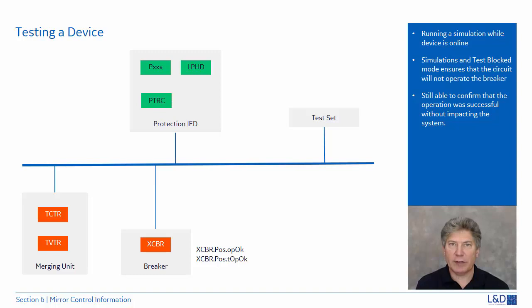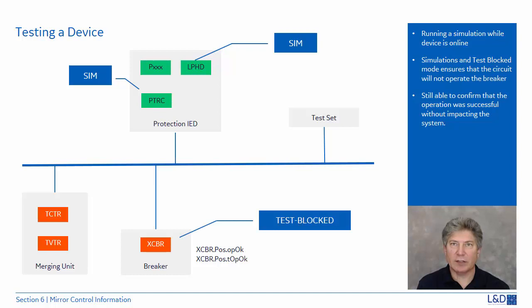In the logical node LPHD of the main protection relay, the data object SIM shall be set to true. The logical device for the protection function shall be set to mode test. In the logical node XCBR for the circuit breaker, protection shall be set to mode test blocked.